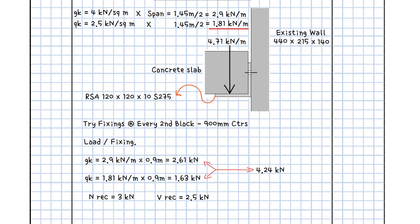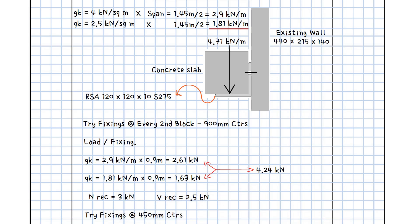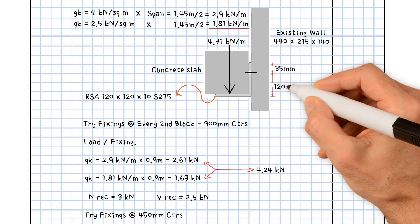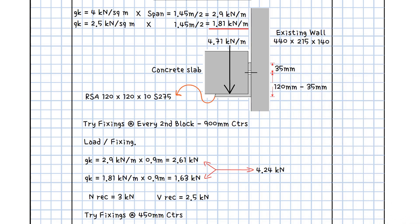Therefore, let's try fixings at 450 mm centres, in the centre of each block. Assume the distance from the top of the angle to the bolt centreline is 35 mm. So the distance from the bearing point of the angle to the bolt centreline equals the length of the vertical leg, 120 mm, minus 35 mm, which equals 85 mm.